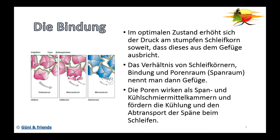Bei ganz neuen Schleifmitteln gibt es auch einen Mikroausbruch – man sieht es auf dem Bild, da brechen viele kleine Körner weg, und das Ganze ist dadurch wesentlich feiner. Das Verhältnis von Schleifkörnern zur Bindung und somit auch der Porenraum – das nennt man Gefüge. Zwischen dem Korn und der Bindung muss immer noch ein Porenraum existieren, weil wir schließlich Späne abtragen und dafür einen Raum brauchen, wo die sich ablagern können – das ist dann der Spanraum.